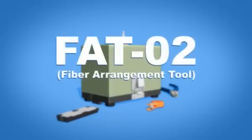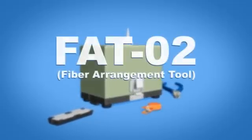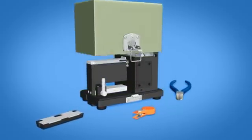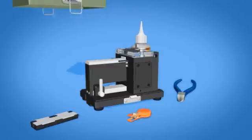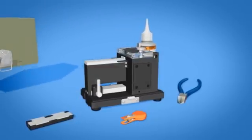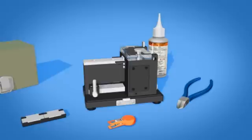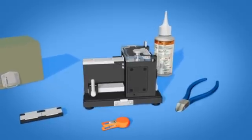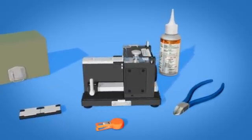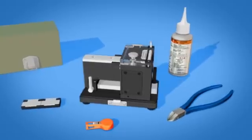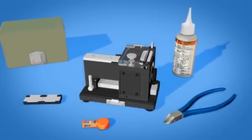The FAT02 fiber arrangement tool is designed to arrange 250 micron coated fibers and make a temporary ribbon configuration so that the fibers may be mass fusion spliced using the same procedures as conventional ribbon fiber. Any number of fibers which are applicable to mass fusion splicing may be arranged and ribbonized. In this video we'll review the Fujikora FAT02 operation.